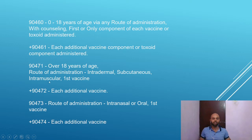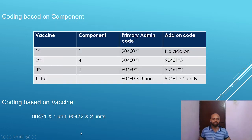90472 is for each additional vaccine. 90473 — the route of administration is intranasal or oral — is for the first vaccine. 90474 is for each additional vaccine via intranasal or oral route.